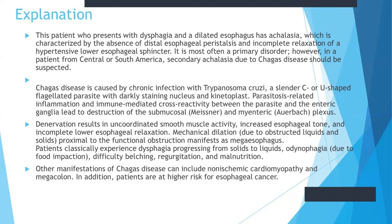Patients classically experience dysphagia progressing from solids to liquids, then odynophagia due to food impaction, and also difficulty belching, regurgitation, and malnutrition. The other manifestations of Chagas disease include non-ischemic cardiomyopathy, in which you can see the organisms on histology or biopsy of the cardiac muscle, and megacolon. In addition, patients are at higher risk of esophageal cancer.